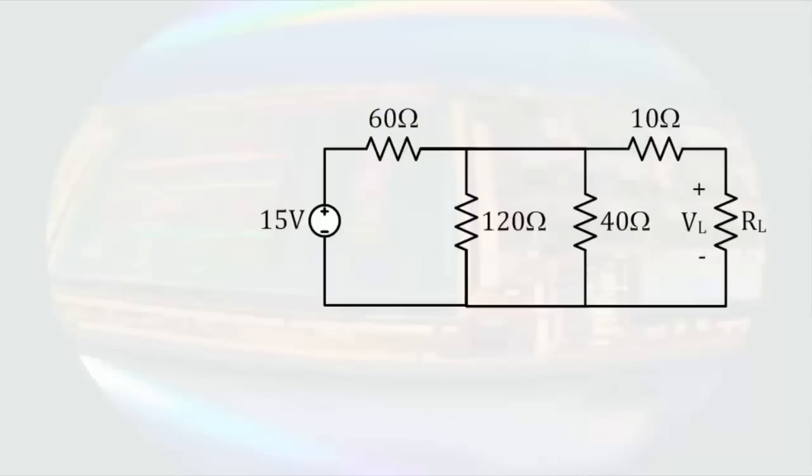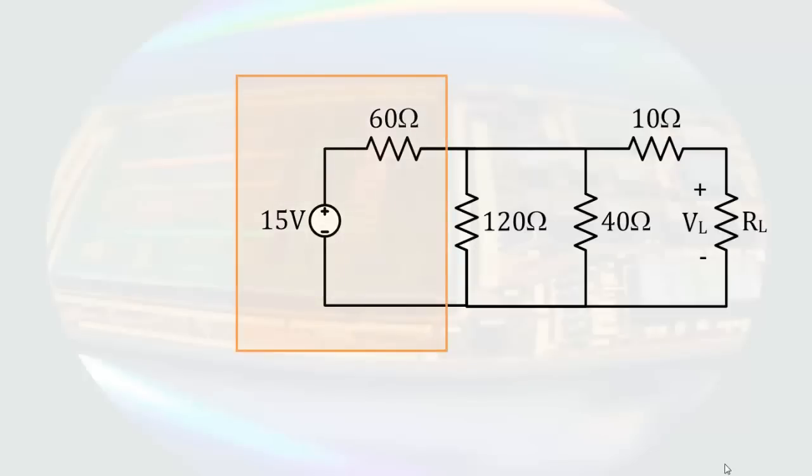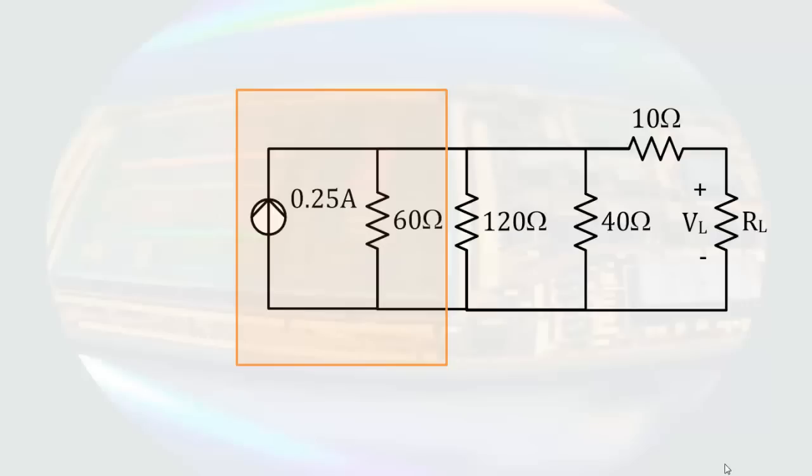Imagine some instructor somewhere for this circuit asks you to find an expression for VL in terms of RL. In light of the previous comments I made, you probably know that source transformations are going to help us out here. We notice that the left side of the circuit is a voltage source in series with a resistor. From what we just learned, we know that we can make this into a current source in parallel with a resistor. The value of the source using Ohm's Law is 15 volts divided by 60 ohms, so that the source can be represented by a quarter amp source in parallel with a 60 ohm resistor.